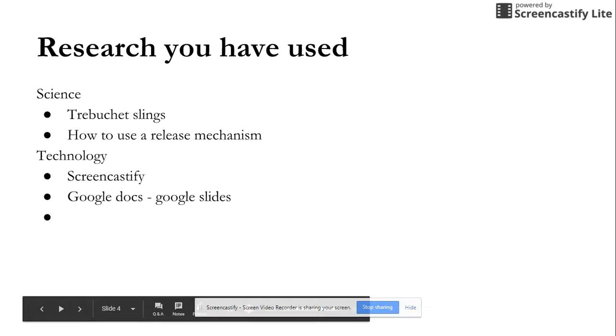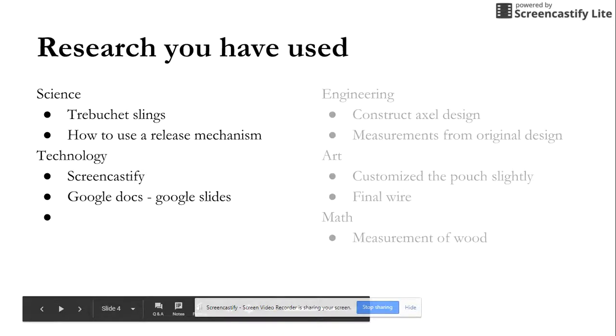The research we used for science was trebuchet slings and how to use a release mechanism. For technology, we used Screencastify, Google Docs, and Google Slides. For engineering, we had to construct the actual design using an all thread, which is like a really long screw without a head. The measurements for the original design were 50 by 25 by 38.